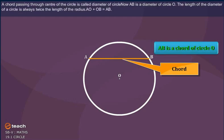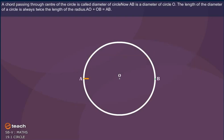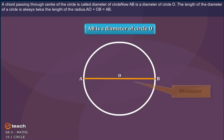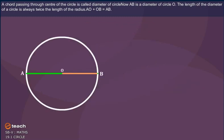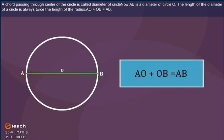A chord passing through center of the circle is called diameter of circle. Now A, B is a diameter of circle O. The length of the diameter of a circle is always twice the length of the radius. A, O plus O, B is equal to A, B.